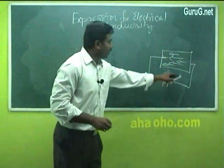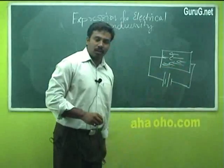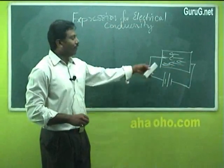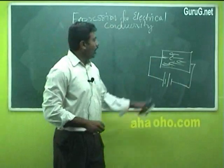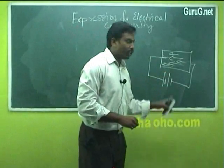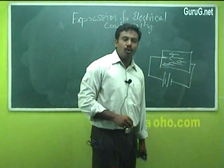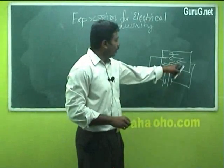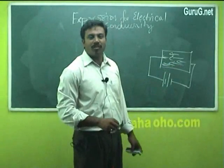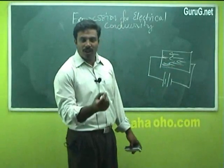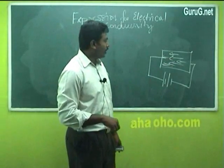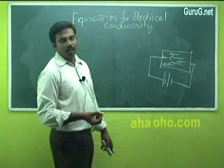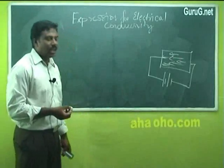Before the application of the electric field, all the electrons will be moving in random motion. After the application of the electric field, a potential difference will be maintained between the two endpoints. Due to this, all the electrons will be moving or drifted towards the positive side, or opposite to the direction of the applied electric field.